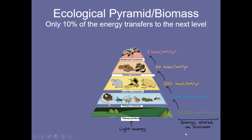Biomass is how much mass a level actually has. The bottom of the pyramid has the biggest biomass. The next level has a smaller total mass, and the next has a smaller total mass still. We have a lot of plant life that has to support fewer primary consumers, and a lot of primary consumers to support even fewer secondary consumers, because these animals need to eat a lot of the level below to survive. At the top, the quaternary consumers, there are very few of them, but this whole pyramid is supporting that big organism at the top.